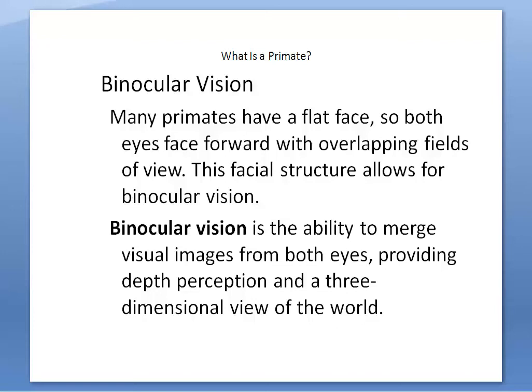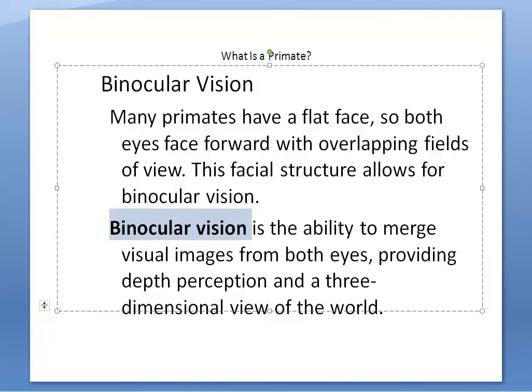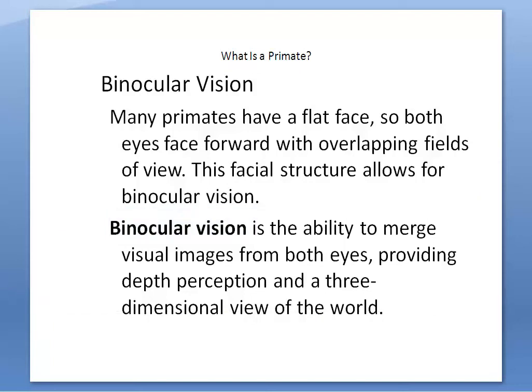Our next characteristic is binocular vision. Many primates have a flat face so both eyes can face forward with overlapping fields of view, and this facial structure allows for binocular vision. Binocular vision is the ability to merge visual images from both eyes, providing depth perception and a three-dimensional view of the world. It's not simply the ability to see really far — it's about merging the two visual images to provide depth perception and a 3D view.